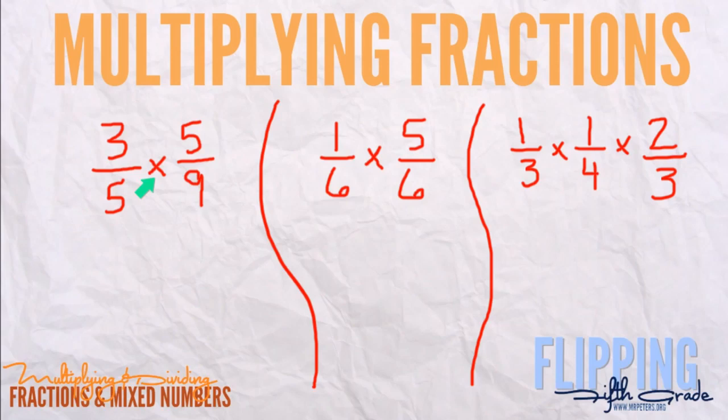First problem: three-fifths times five-ninths. We're going to look diagonally. Three and nine share the factor of three, so three divided by three is one and nine divided by three is three. But look, five and five are the same number, so you can divide both by five to get one—they cancel out. Now one times one is one, and one times three is three. So we get the answer of one-third.